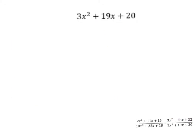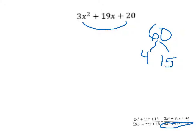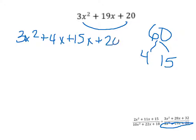Now for the last expression — the denominator of the second fraction. Multiply 20 and 3 to get 60. The factor pair of 60 that works is 4 and 15. Put that back into the problem to get 3x² + 4x + 15x + 20, then put parentheses around each pair to group it.